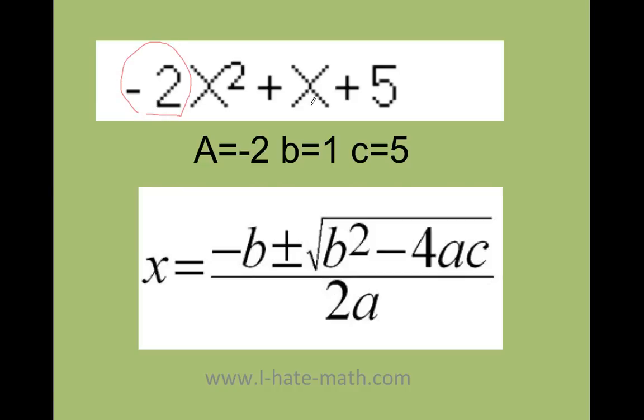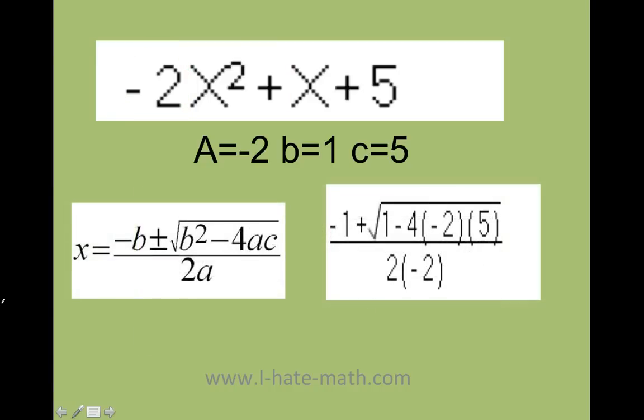A is going to be negative 2, B is 1, and C is equals to 5. Let's go ahead and plug it. Now, here I put negative 1 plus and minus the square root of B squared. Well, 1 times 1 is just 1. Minus 4 times A. Remember A is negative 2 and C is 5.